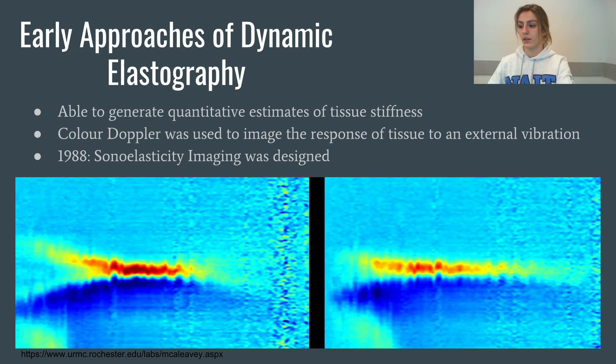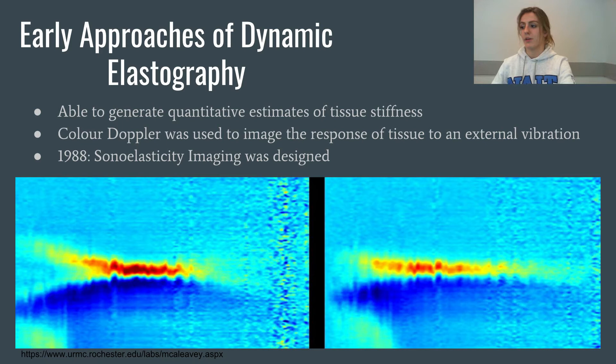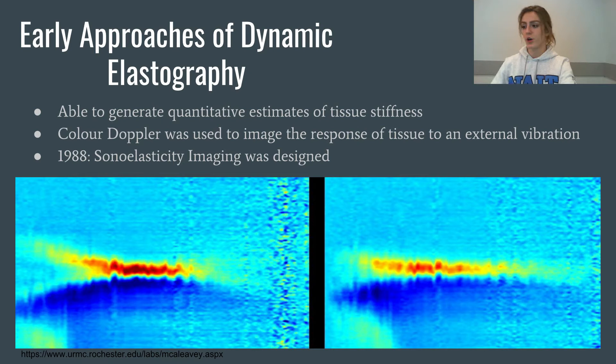Early elastography used color Doppler to generate these quantitative estimates. Once the color is turned on, the fremitus method is applied and used to detect breast lesions. To apply this fremitus method, we simply ask the patient to hum. This humming provides a vibration that moves the tissue enough to be picked up by color Doppler. There is a significant disadvantage to this method, however — people hum at different pitches and volumes, so the results are highly subjective. To overcome these disadvantages, the University of Rochester designed a method using color Doppler along with an external vibration device in 1988, known as sonoelasticity. This allows the results to be more standardized, preventing discrepancies that may come about with individual humming.